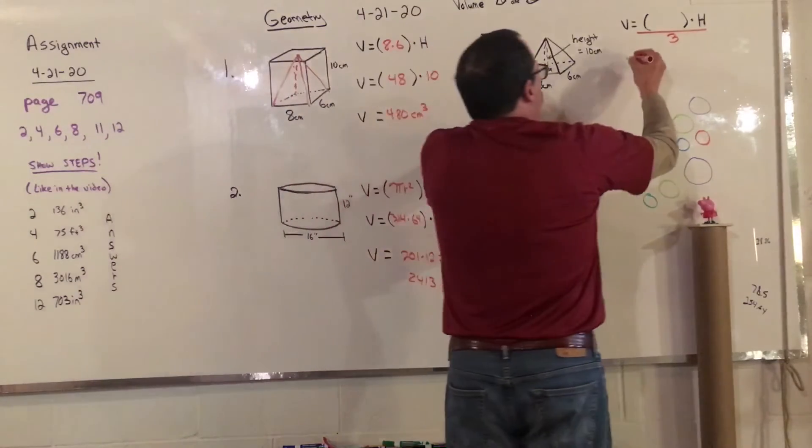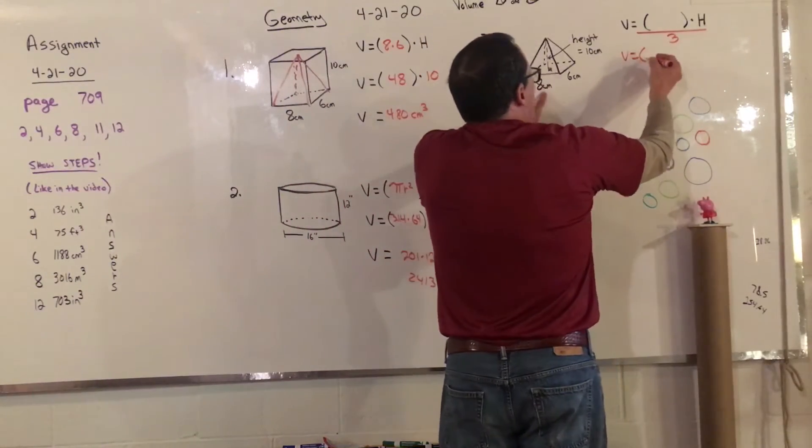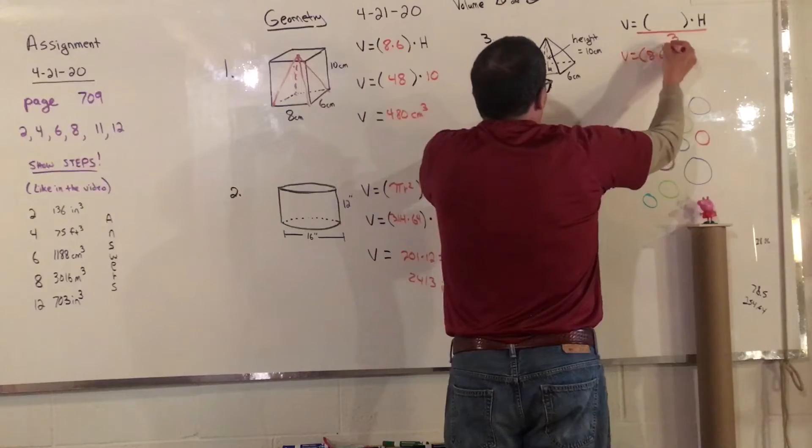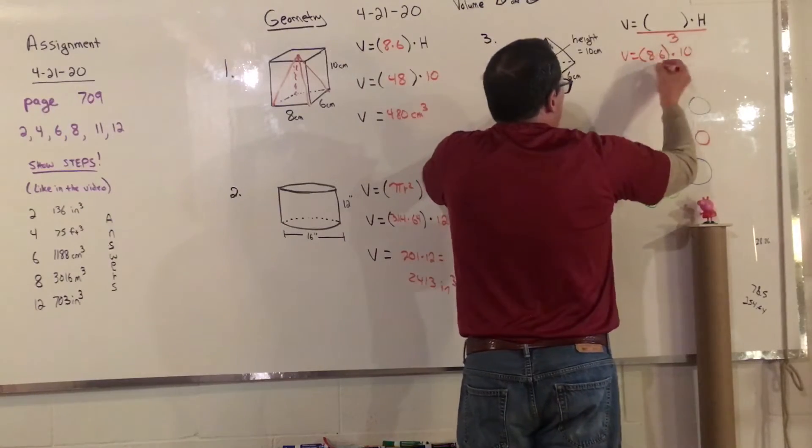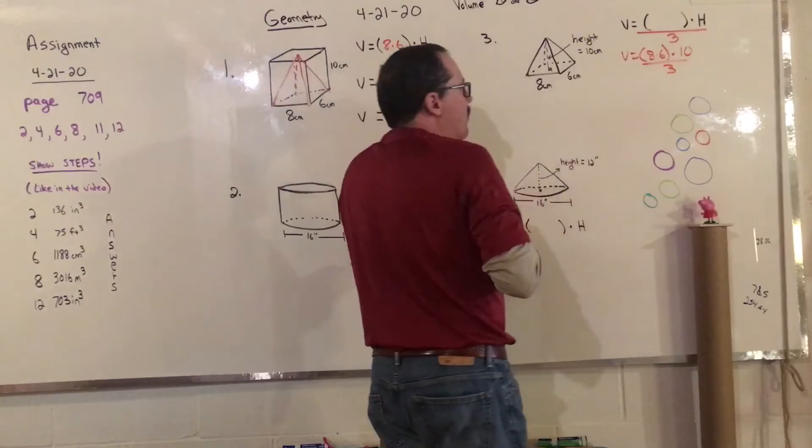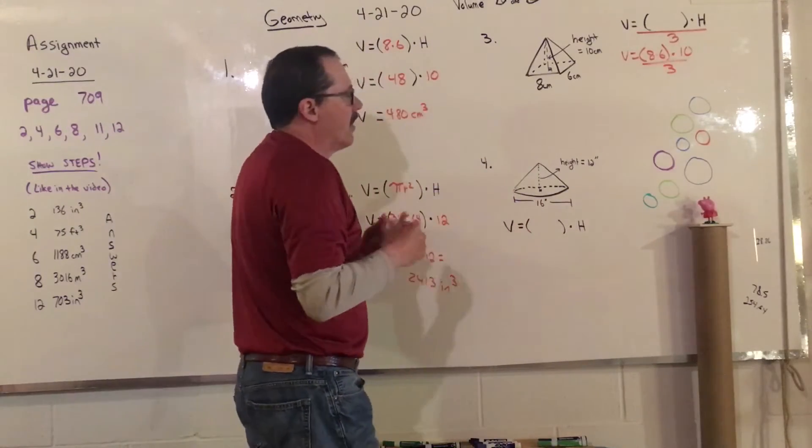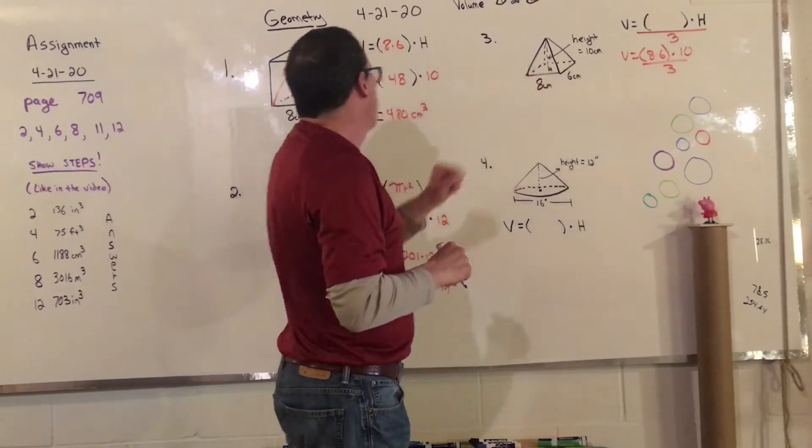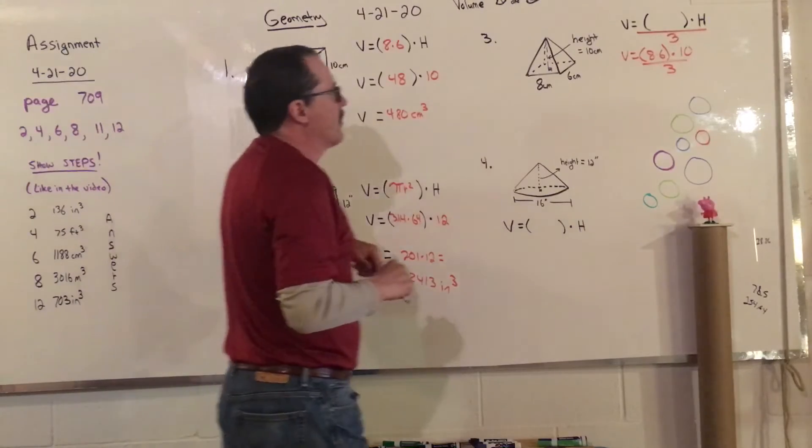And that's the difference between that one and this one. And so we end up with V equals, we still do 8 times 6, and we still do times 10, but we have to remember divide by 3. Boy, do a lot of people forget to divide by 3. Well, it kind of makes sense because it's got to be less cubes than the whole box right there.